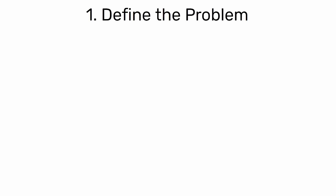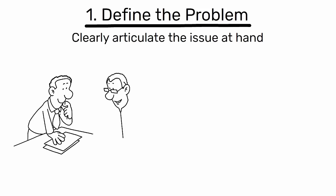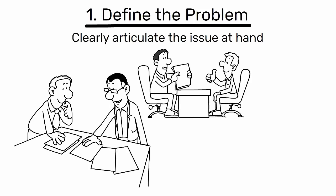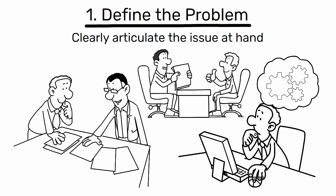Step 1: Define the problem. Clearly articulate the issue at hand. This includes gathering data, documenting the problem, and understanding its impact on the process or system.